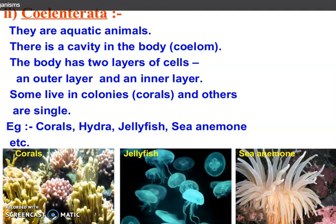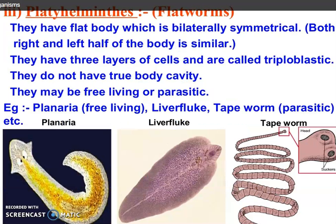Second is Coelenterata. They are also called cnidarians. They are aquatic animals. They have a cavity in the body which is called the coelom. Their body is radially symmetrical and they have two layers of cells — an outer layer and an inner layer. Some live in colonies and some are solitary. For example, hydra, jellyfish, and sea anemone.